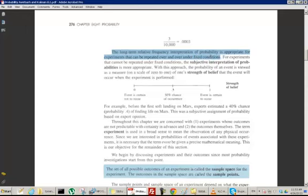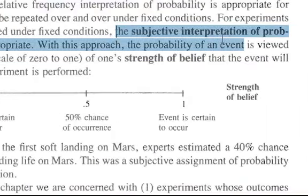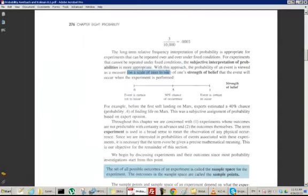For experiments that cannot be repeated over and over under fixed conditions, we can't really use this relative frequency meaning. In that case, maybe we use what's called the subjective interpretation of probability. With this approach, the probability of an event is viewed as a measure on a scale from 0 to 1 of the strength of belief that the event will occur when the experiment is performed.